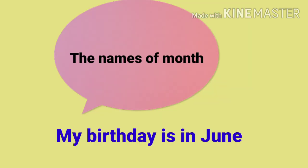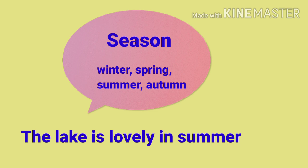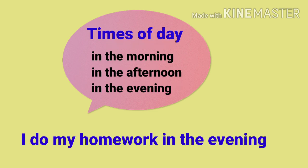IN. We use IN before the names of months. Example: my birthday is in June. Year: we built the tree house in 1998. Season: the lake is lovely in summer. Times of day: I do my homework in the evening.